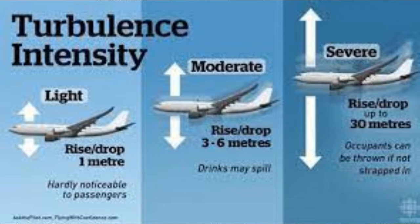What is air turbulence? Turbulence is a short-term change in the velocity of air. Turbulence happens when there is a rapid change in the air speed, direction, movement, or all of these.